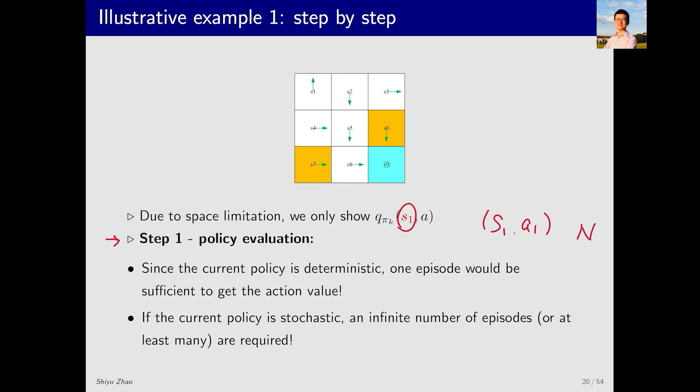Since this example has a deterministic policy and environment, regardless of how many times I sample, the resulting trajectories will be the same. As a result, we only need to sample once to compute Qπk(S1,A1). Of course, in more complex scenarios with stochastic policies or environments, an infinite number of episodes, or at least many episodes, are required to compute an average.